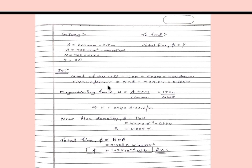First we calculate the MMF of the coil: MMF equals current times number of turns, giving 1500 ampere-turns. From the diameter we get the circumference: pi times D equals 0.628 metre. The magnetizing force H equals MMF divided by circumference, giving approximately 2380 ampere-turns per metre. Flux density B equals permeability times H, where mu is 4 pi times 10 to the power minus 7, so B equals 0.03 tesla.